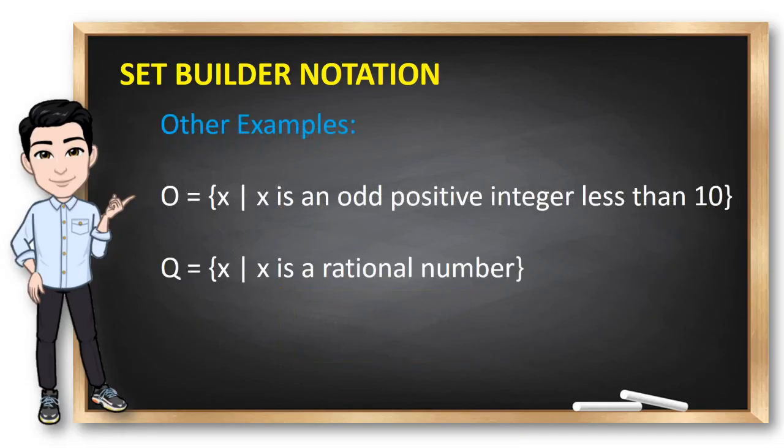Now, how about these examples? Set O is x such that x is an odd positive integer less than 10. Can you give me at least one element for this one? Yes, it could be 3, what else? 7 is possible, and so on. And this set, Q, is a set containing x such that x is any rational number like 3 over 5.